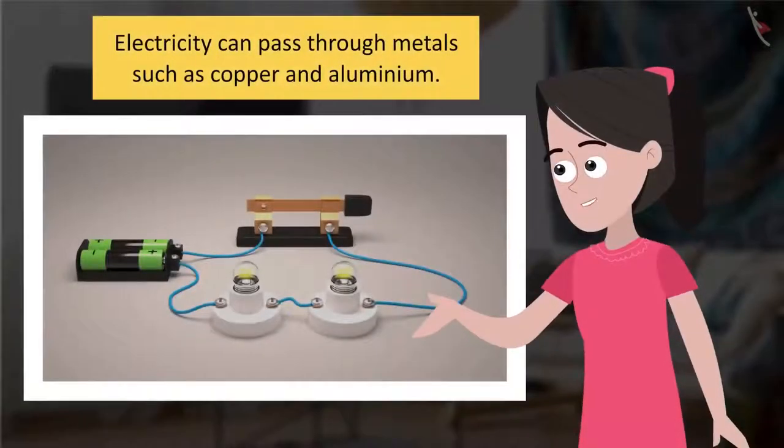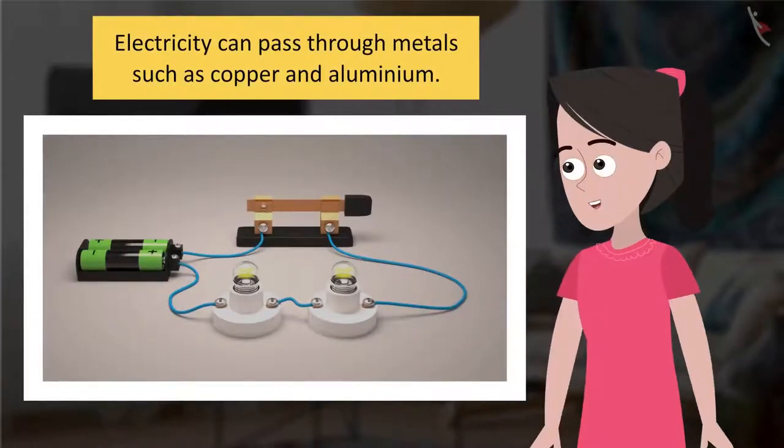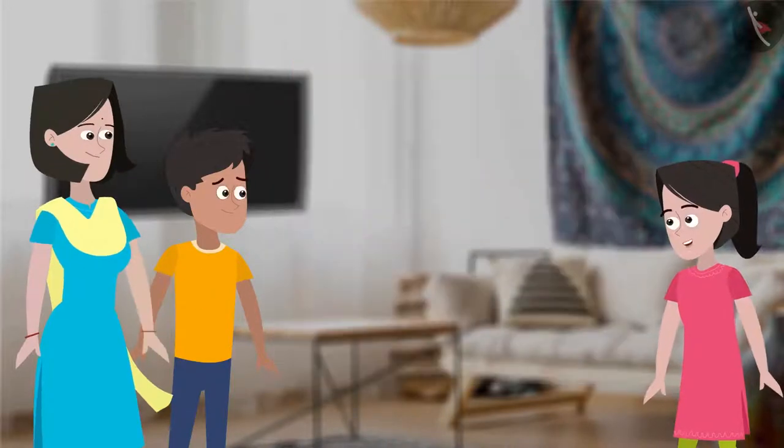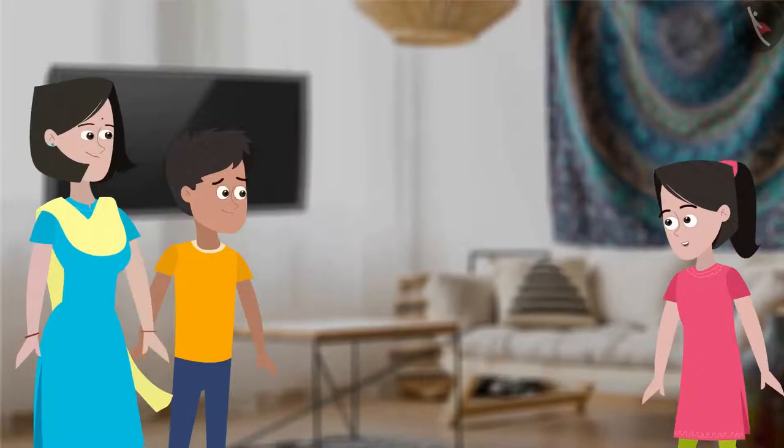Our bodies can conduct electricity. But how? Electricity can pass through metals such as copper and aluminium, right? Not just metals, Sania. Some fluids can also conduct electricity. And water is one of them. The water droplets on your wet hands conducted electricity from that TV point and passed it through your body. You felt it as a jolt. Oh! I could have never guessed that.